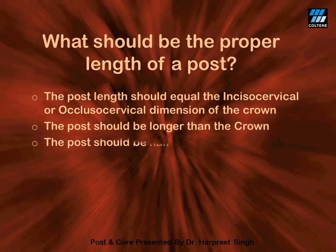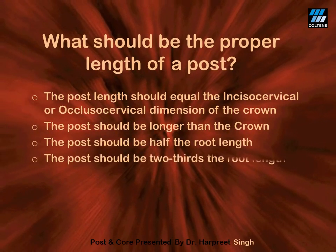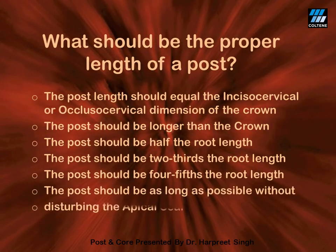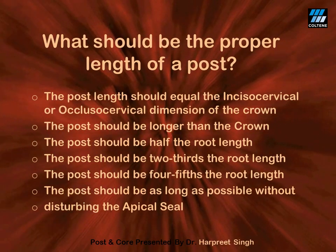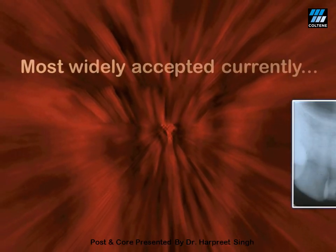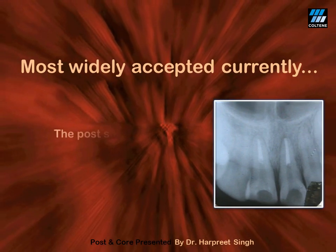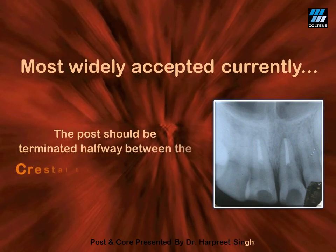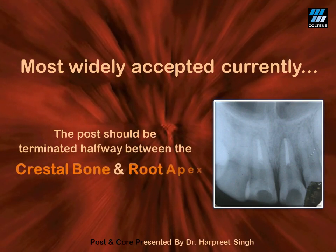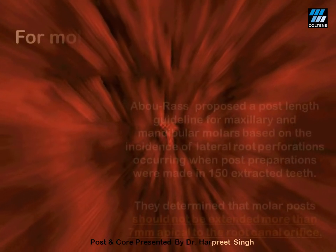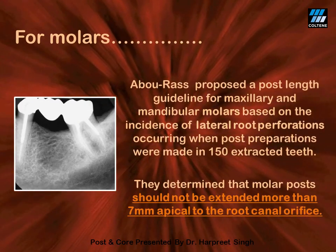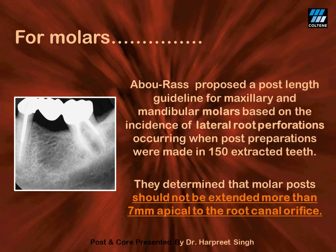Theories mentioned on the slide include opinions that the post length should equal the crown length, or be two-thirds of the root length. However, for fibre posts, the widely accepted concept is that the post should be terminated halfway between the crestal bone and the root apex. For molars, the post length should not extend more than 7 mm apical to the root canal orifice.